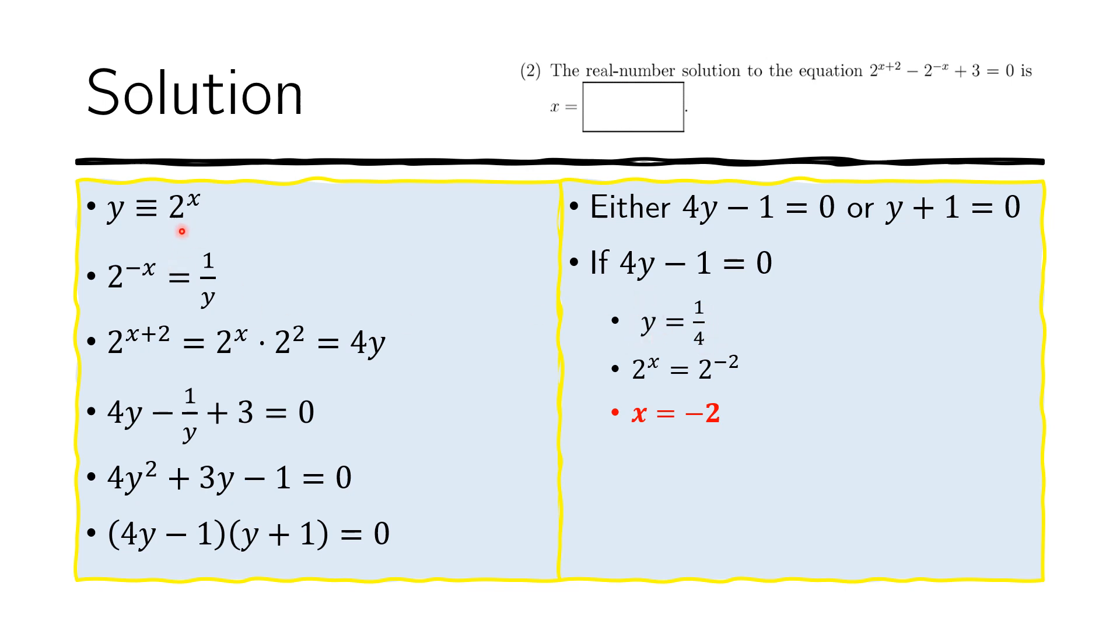Since y = 2^x, we can substitute. We know that 1/4 = 2^(-2), so x = -2. This is a real solution.